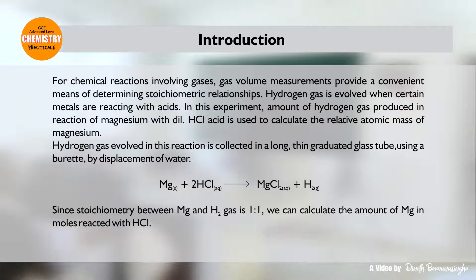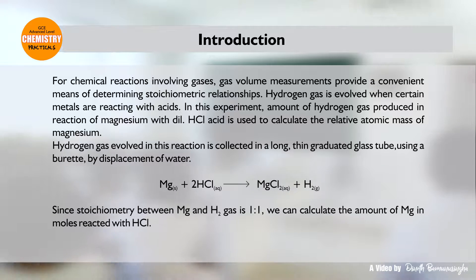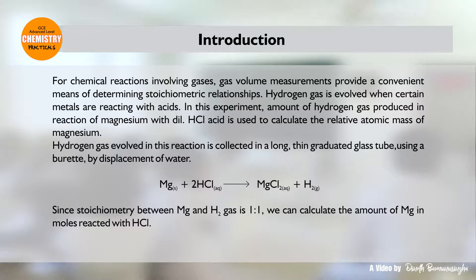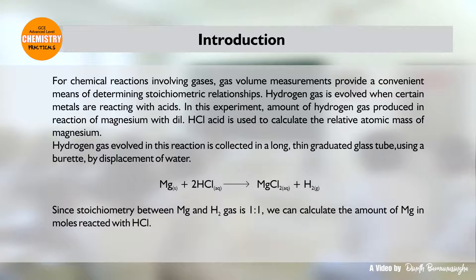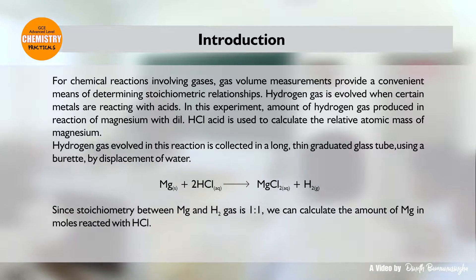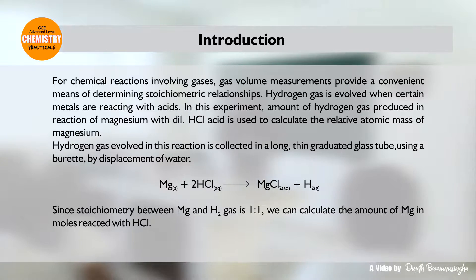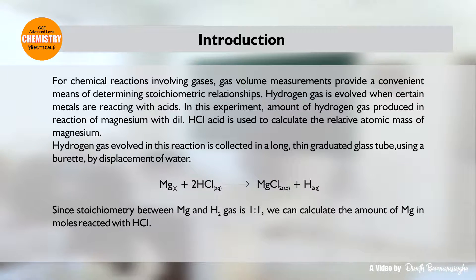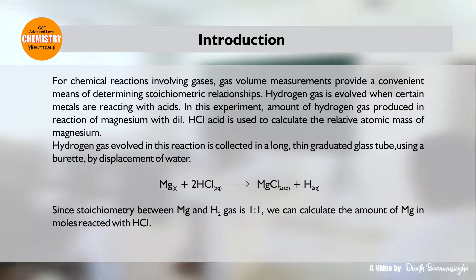Episode 2: Experimental Determination of Molar Mass of Magnesium Using Molar Volume of Hydrogen Gas. For chemical reactions involving gases, gas volume measurements provide a convenient means of determining stoichiometric relationships. Hydrogen gas is evolved when certain metals react with acids. In this experiment, the amount of hydrogen gas produced in the reaction of magnesium with diluted hydrochloric acid is used to calculate the relative atomic mass of magnesium.